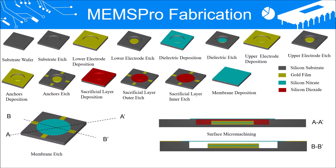As a result of MEMS-PRO fabrication, step-by-step process of process definitions leads to the generation of the sensor model in 3D form. Substrate deposition was first started with, followed by its etching, lower electrode deposition and etch, dielectric deposition and etch, upper electrode deposition and etch, anchor deposition and etch, sacrificial layer patterning, membrane deposition and etch, and finally surface micromachining for sacrificial layer removal, which leads to the generation of an air gap underneath the membrane.